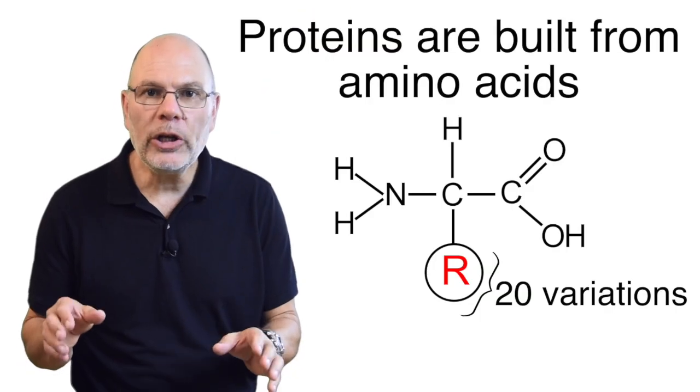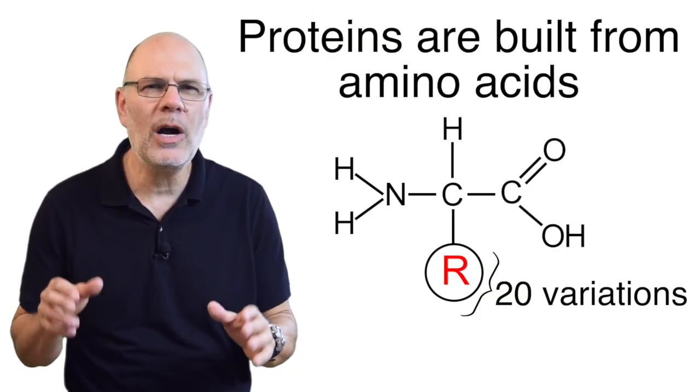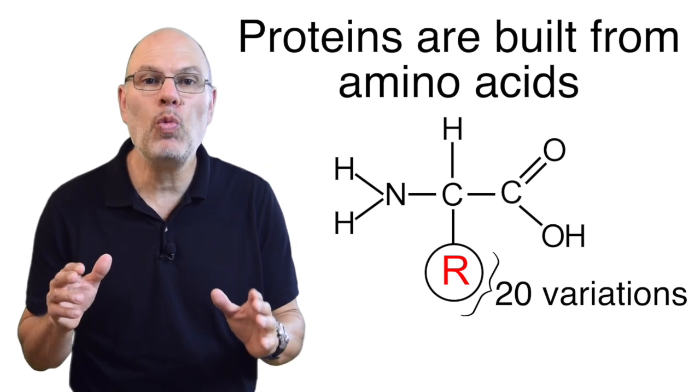The chemistry of proteins is complex. For now, all you need to know is that the monomer of proteins are amino acids, and there are 20 of them.